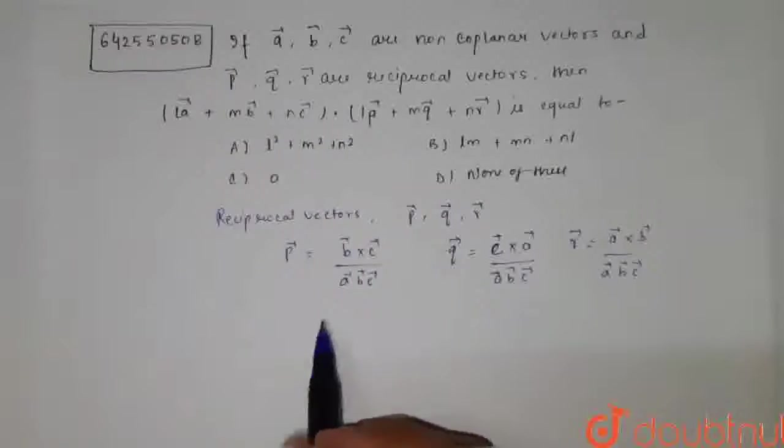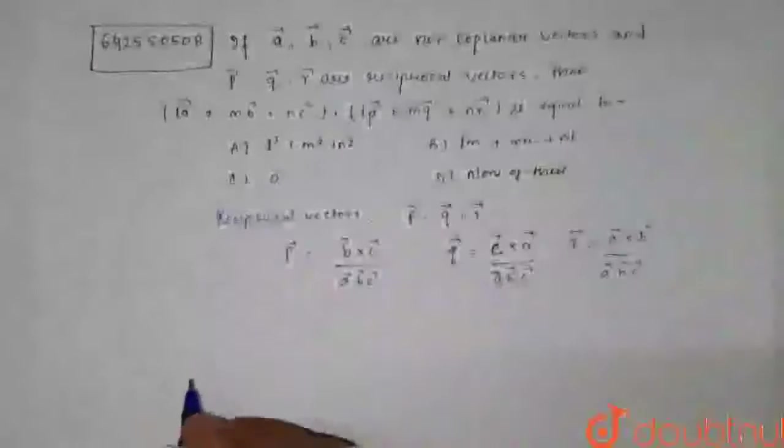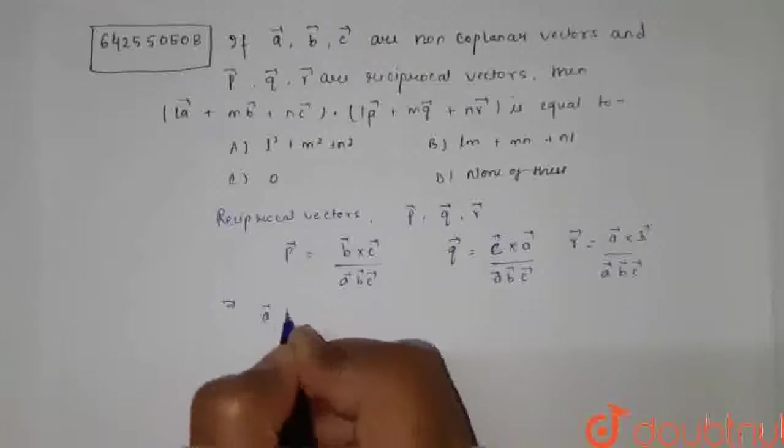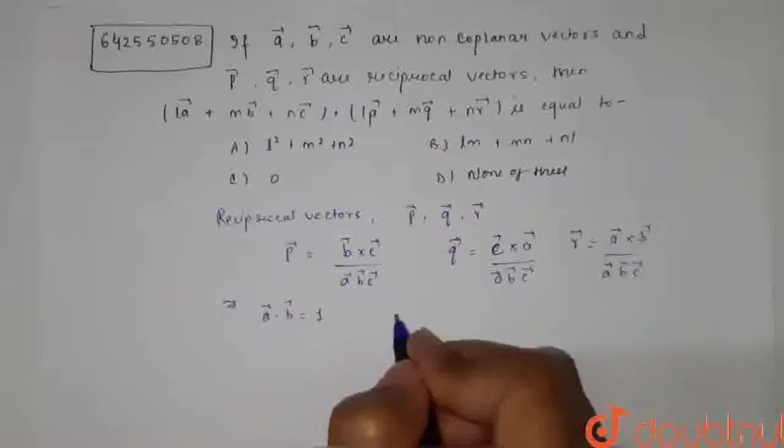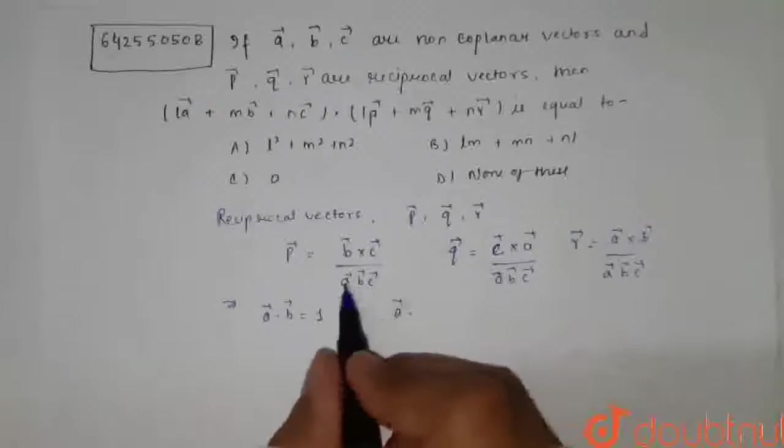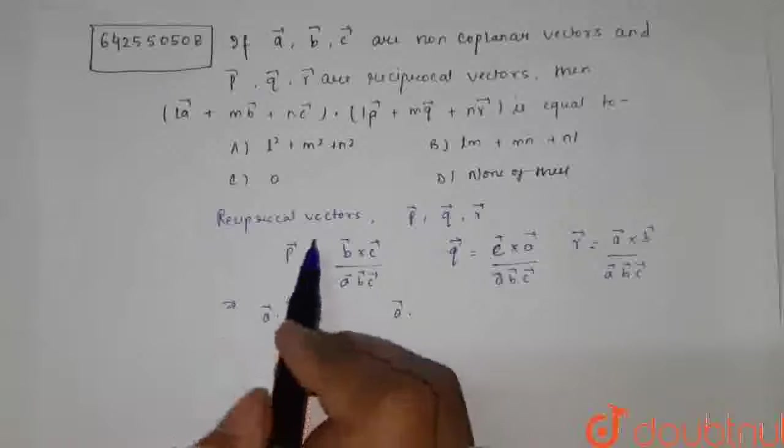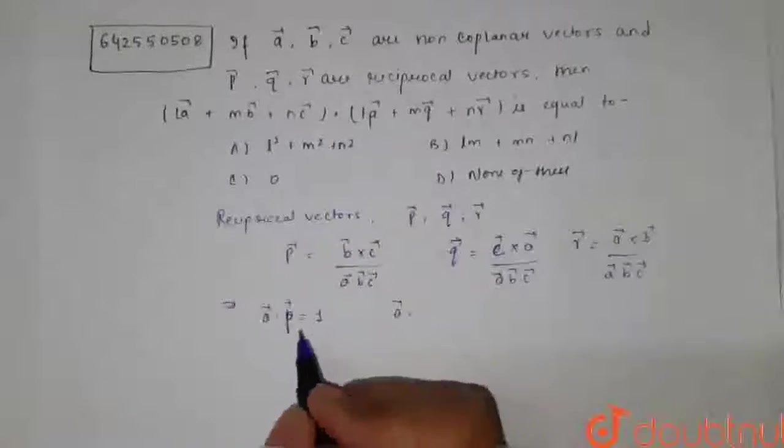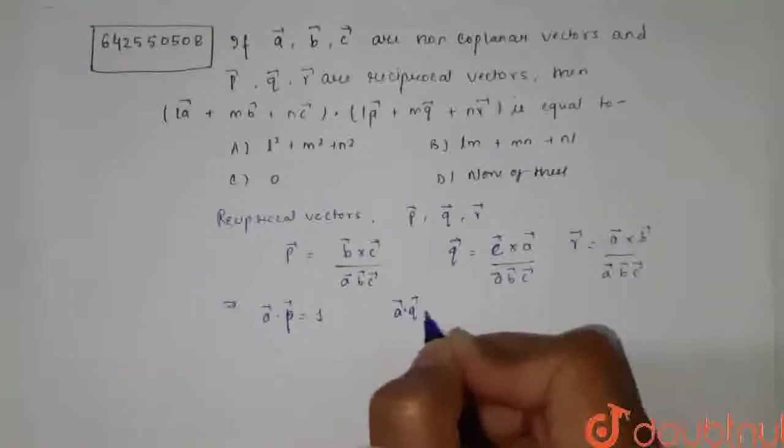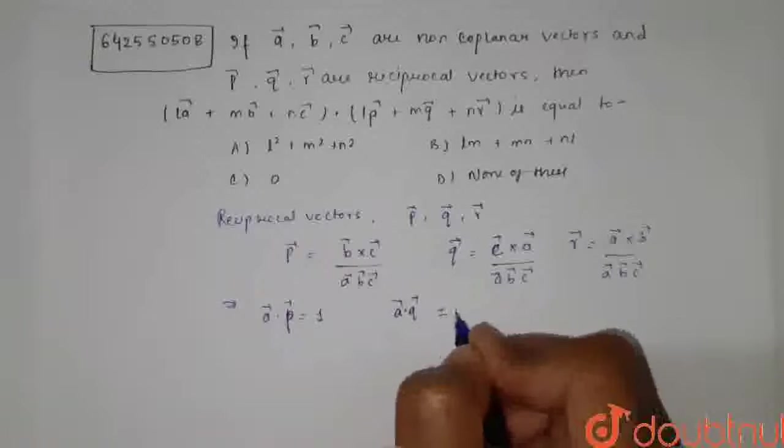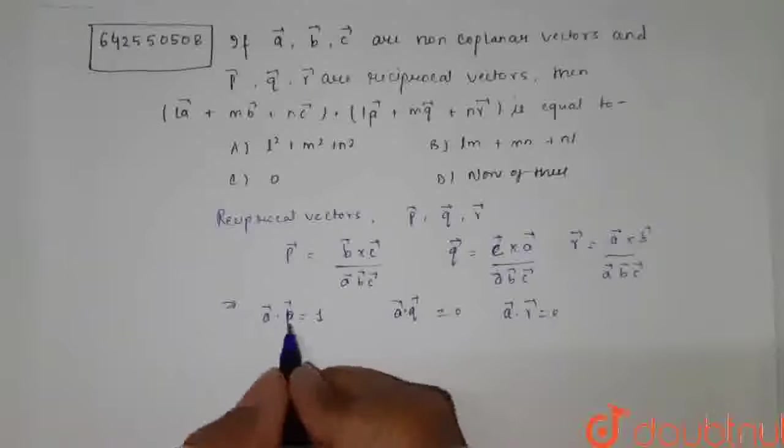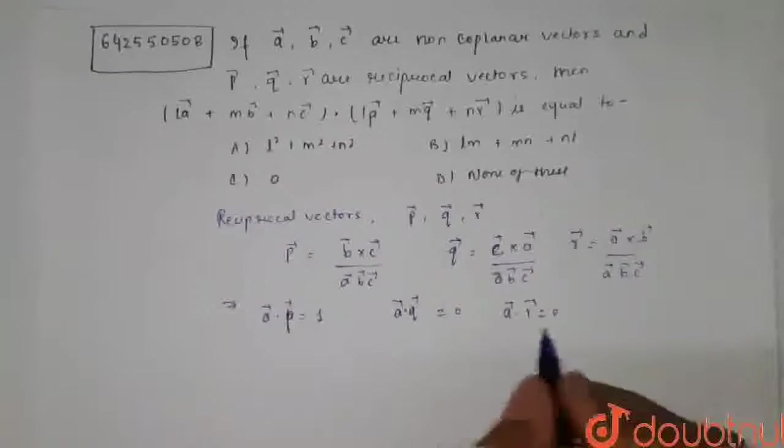Now here we can see, we know that as they are non-coplanar vectors, this implies that the dot product of A into P will be one, but the dot product of A into Q vector is zero or we can say that the dot product of A into R vector is also zero. This reciprocal, these terms will have the dot product as one and the other two will be zero.